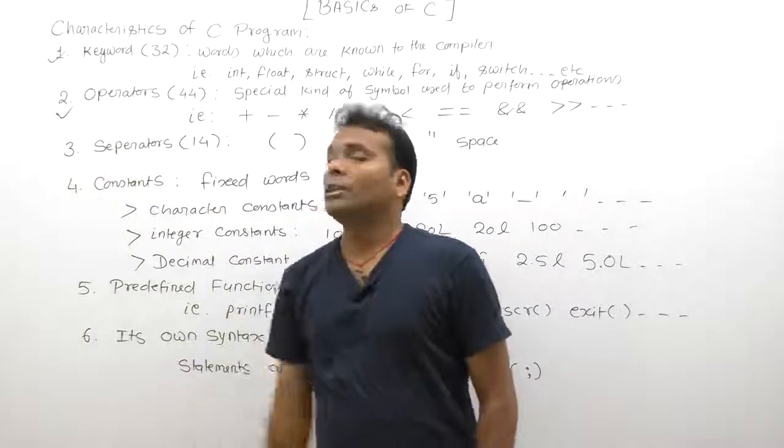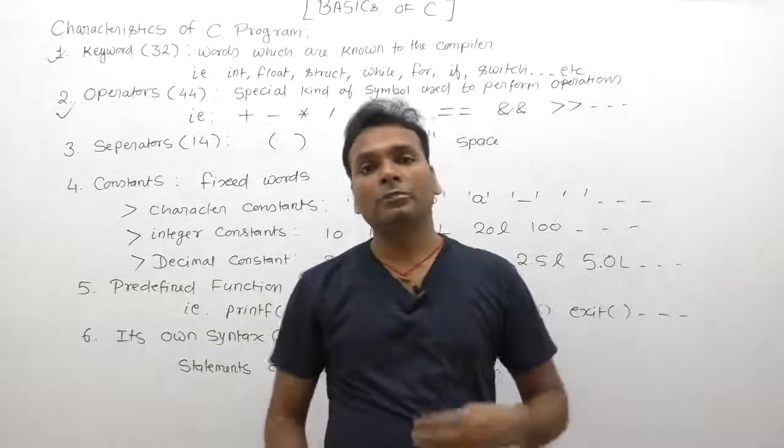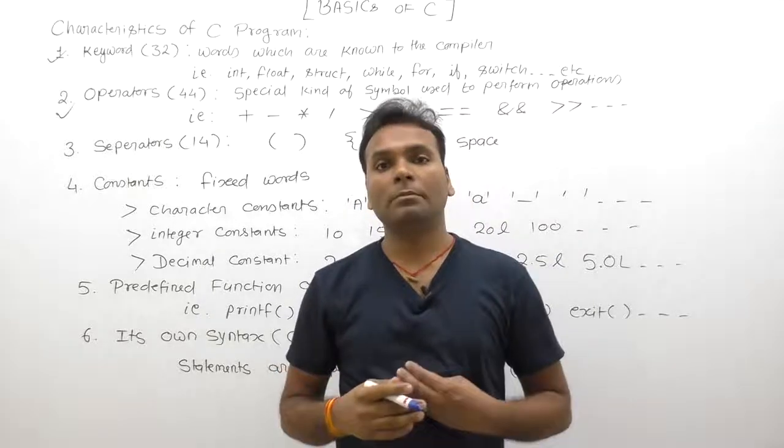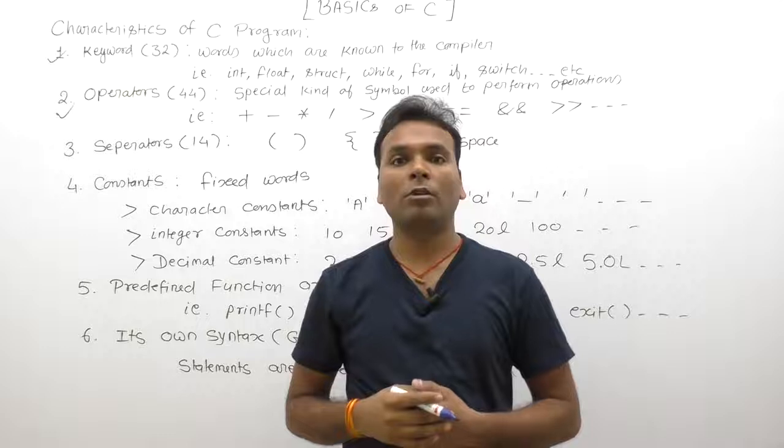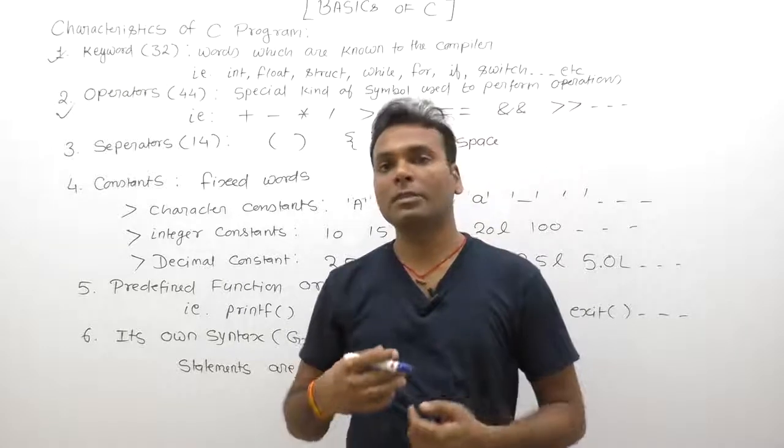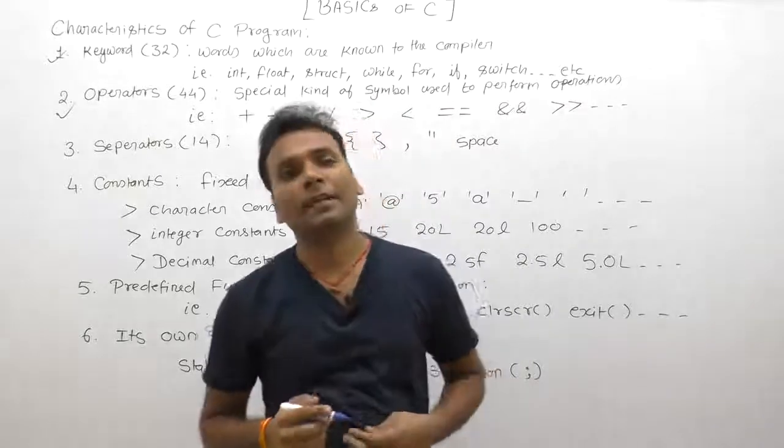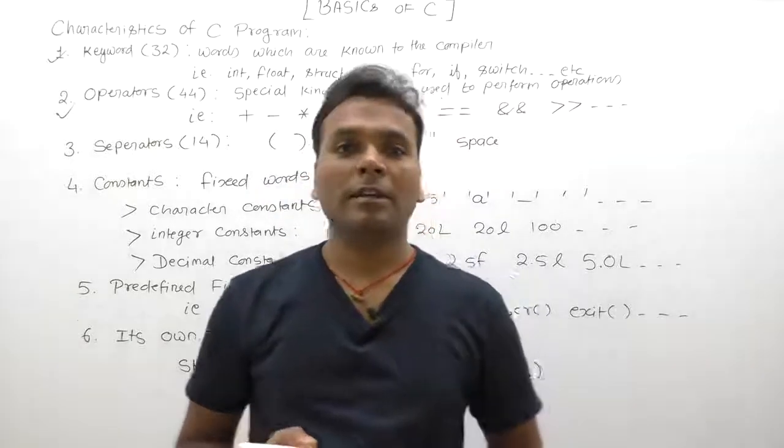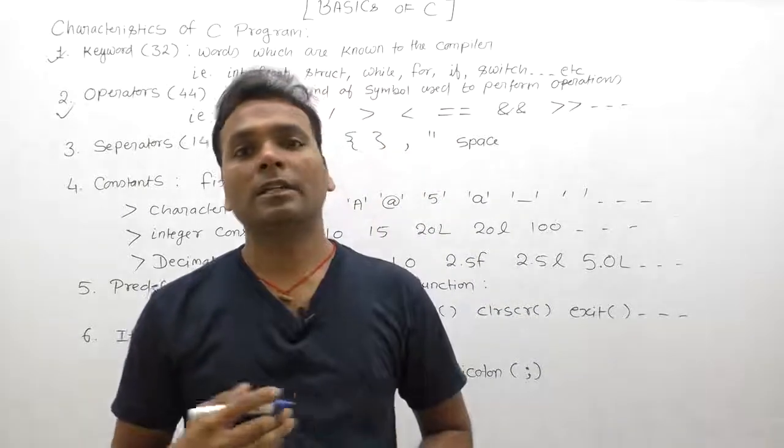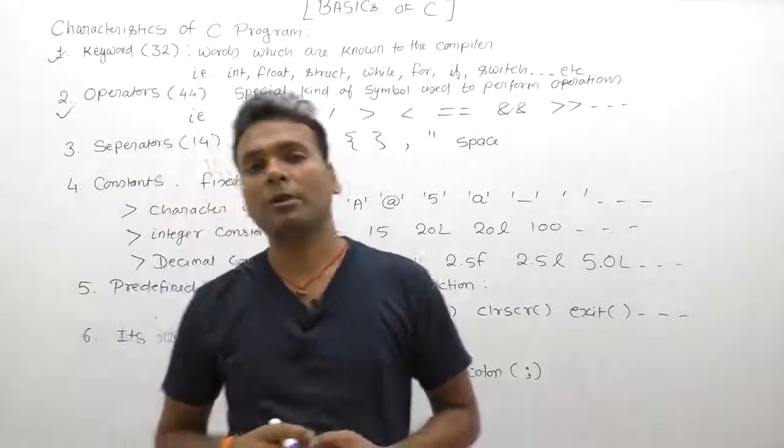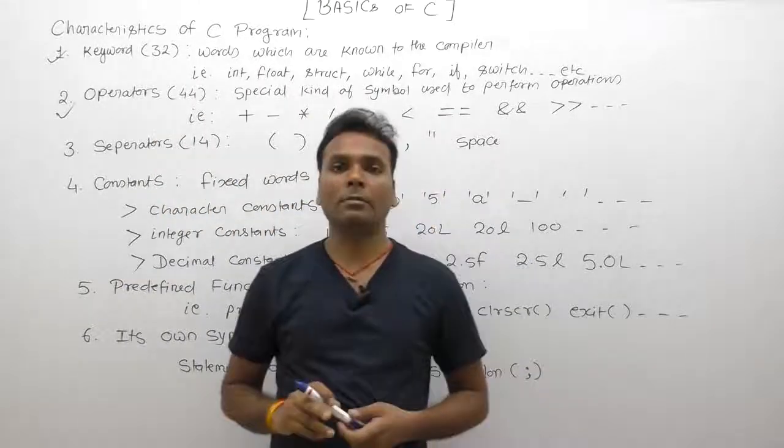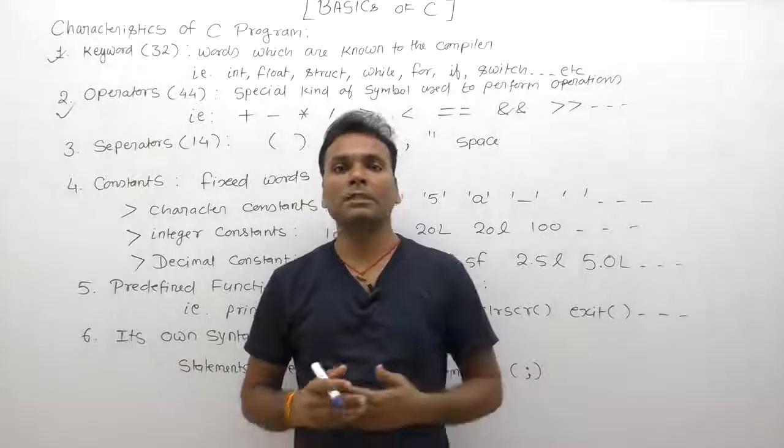Next one, there are 44 operators available in C language, by using which we can apply different types of operations or logic upon a C program. Like arithmetic operations: addition, subtraction, or performing logical or relational bitwise operations. There are 44 operators available in C.